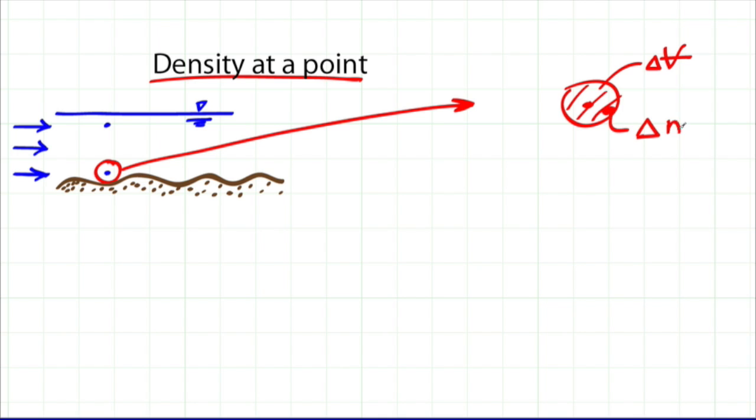Now density at a point is defined like this. The symbol is density, rho. Density is defined as the limit as the quantity of volume goes to zero of the amount of mass divided by the amount of volume.